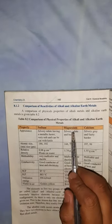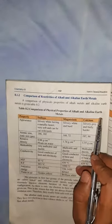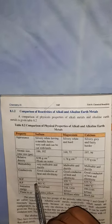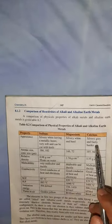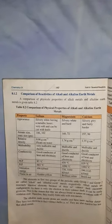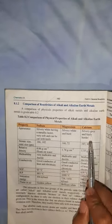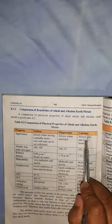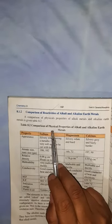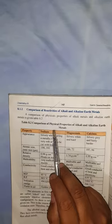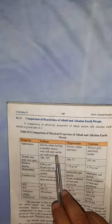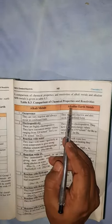Here is a written comparison of physical properties of alkali and alkaline earth metals. Sodium is an alkali metal of group 1, while magnesium and calcium are alkaline earth metals of group 2. We will first discuss the physical properties, then the chemical properties.